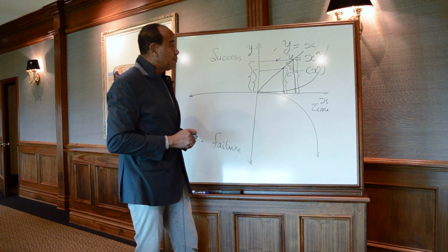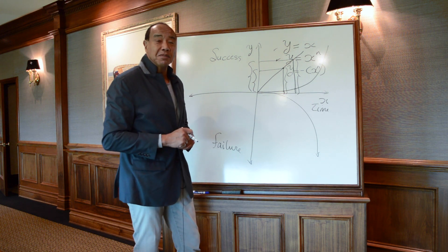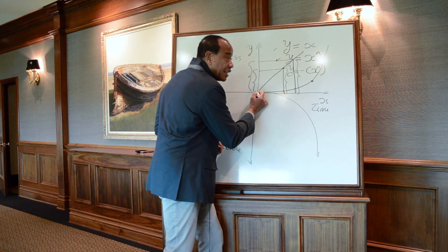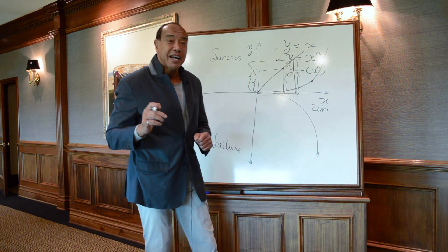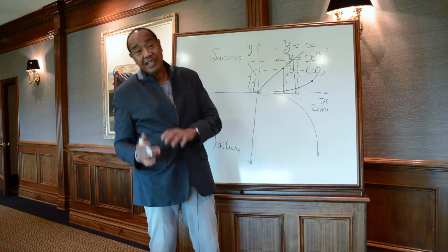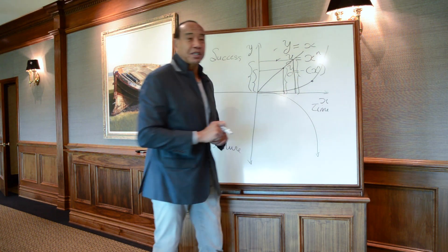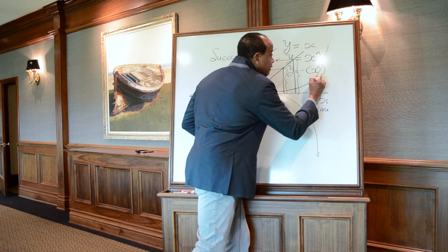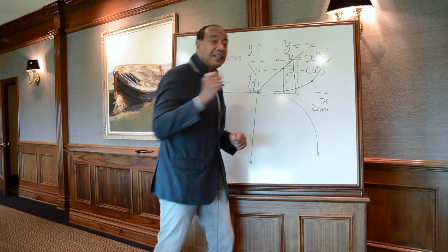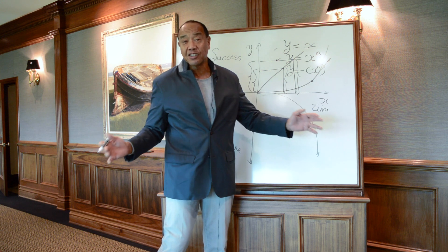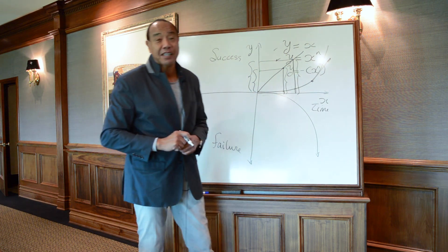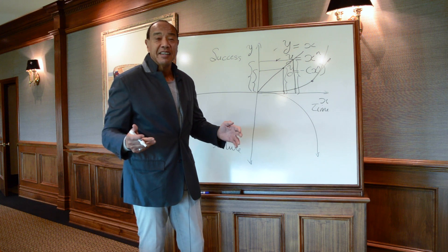There comes a point on this line graph — the inflection point — whereby between the time you start at zero and that point, you put out an inordinate amount of effort and you get a disproportionately low amount of success. But after that inflection point, the gradient of the curve changes. Thereafter, you put out a little bit of effort and you get a disproportionately large amount of success. That's nirvana. But most people don't get to that inflection point — we can see that in every aspect of life.